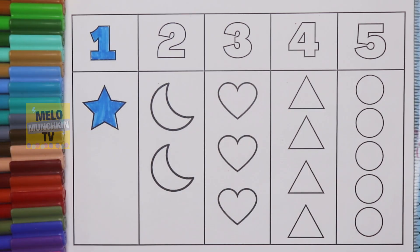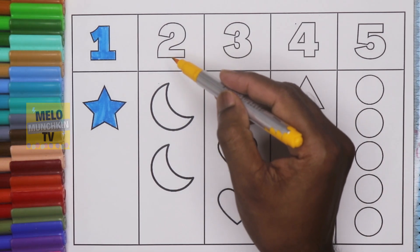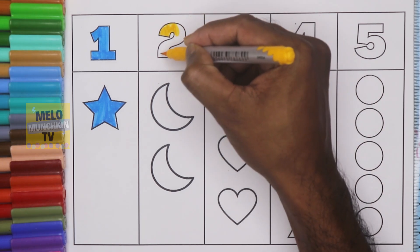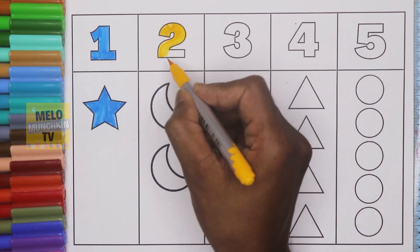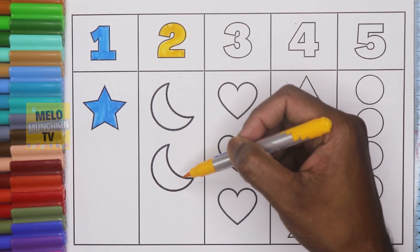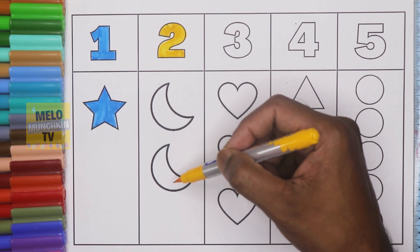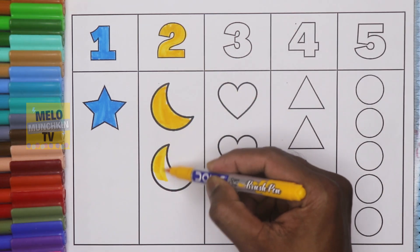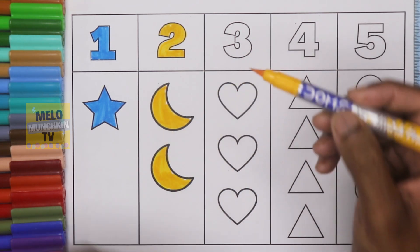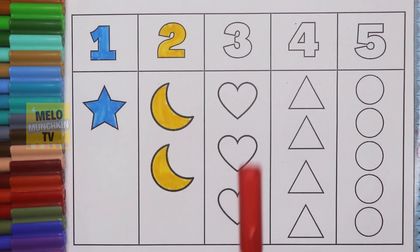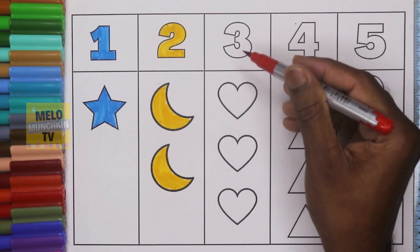This one is light blue color. Next I'll take yellow color to color number two. This is T W O, two. Let's color it. So this is number two and these are two crescents — one crescent, two crescents. Let's color these.